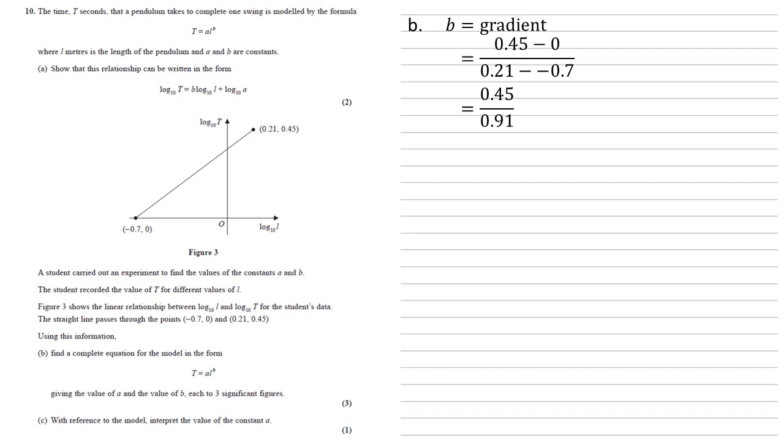Which is 0.45 over 0.91, which is 45 over 91, which as a decimal is 0.495 to three significant figures.